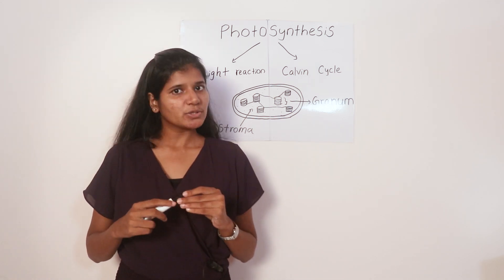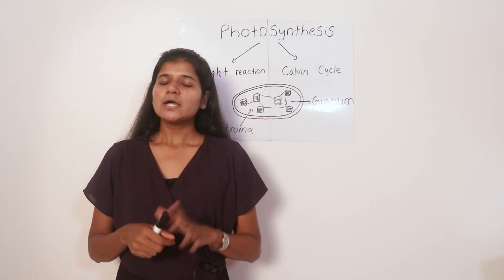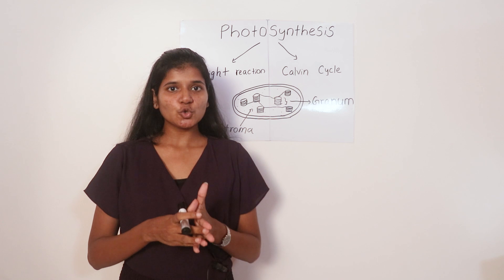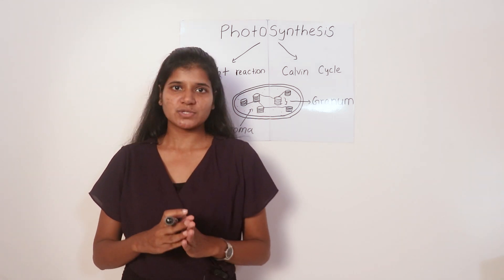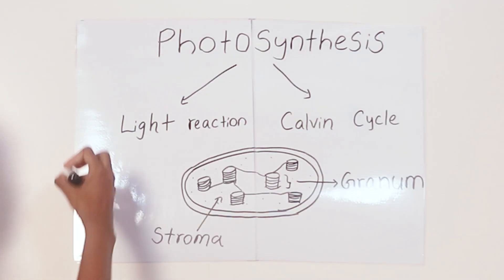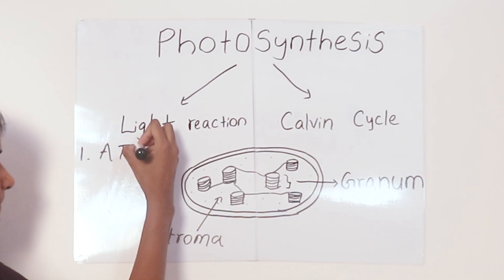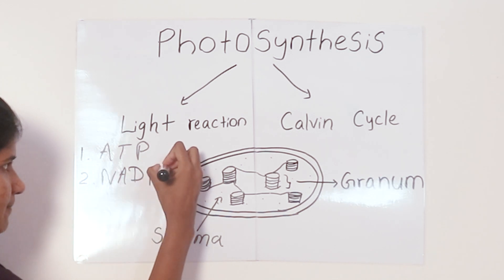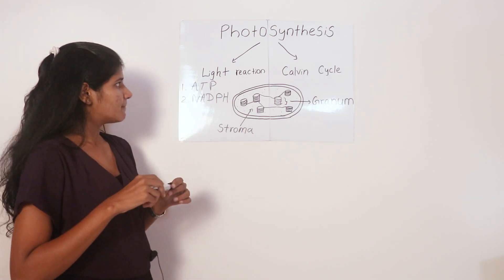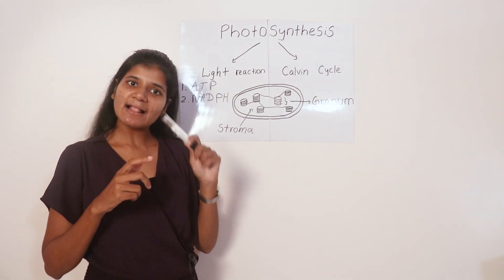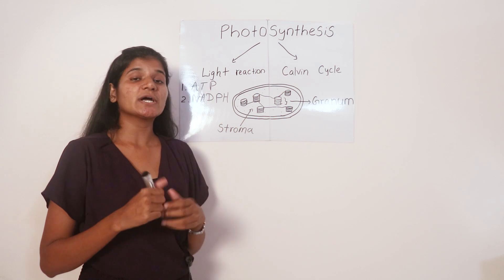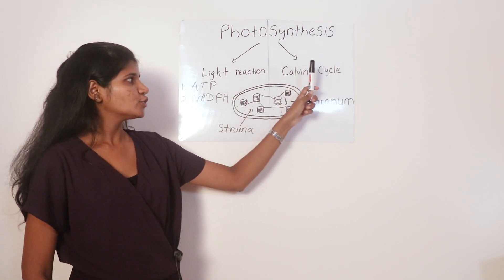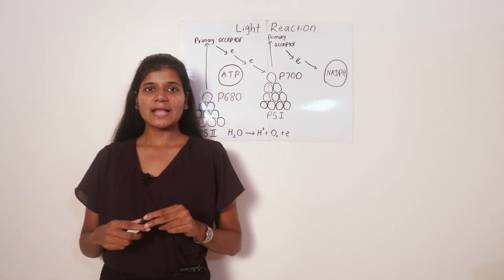Now we'll see how the light reaction is linked to the Calvin cycle. In the light reaction, light energy is trapped and converted into two energy-containing compounds: ATP and NADPH. These two compounds formed in the light reaction are then used in the Calvin cycle to convert carbon dioxide into carbohydrates. That's how the light reaction is linked to the Calvin cycle.